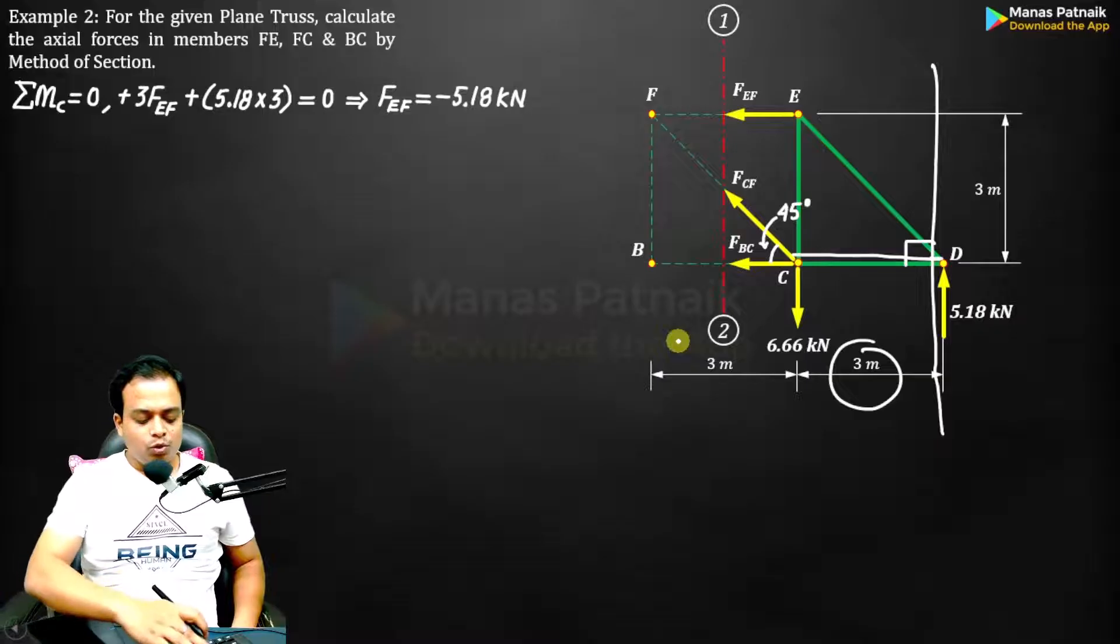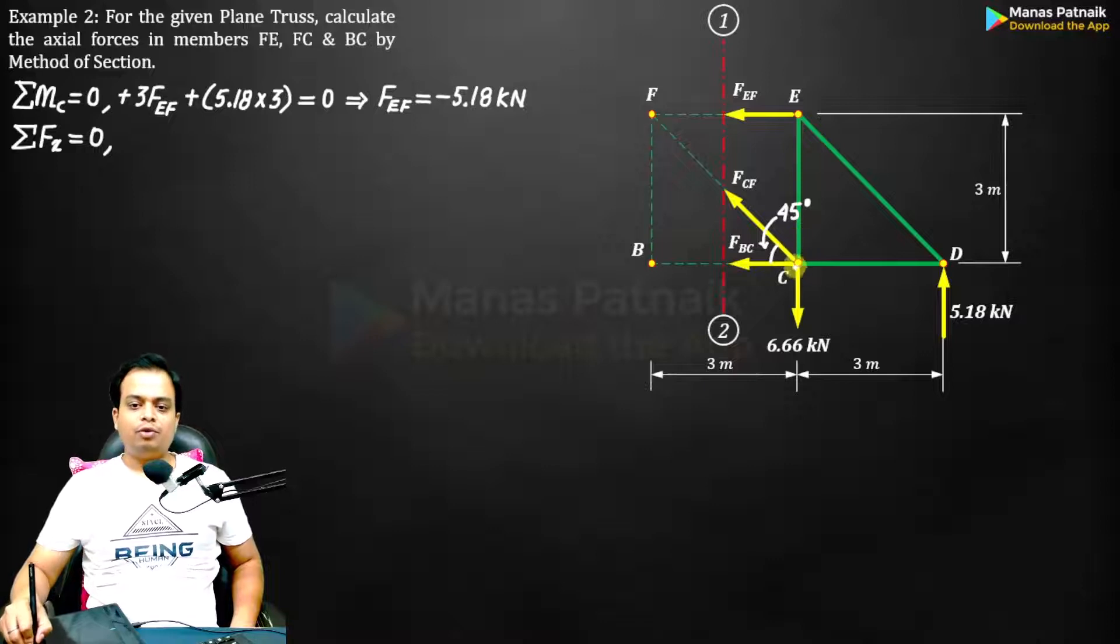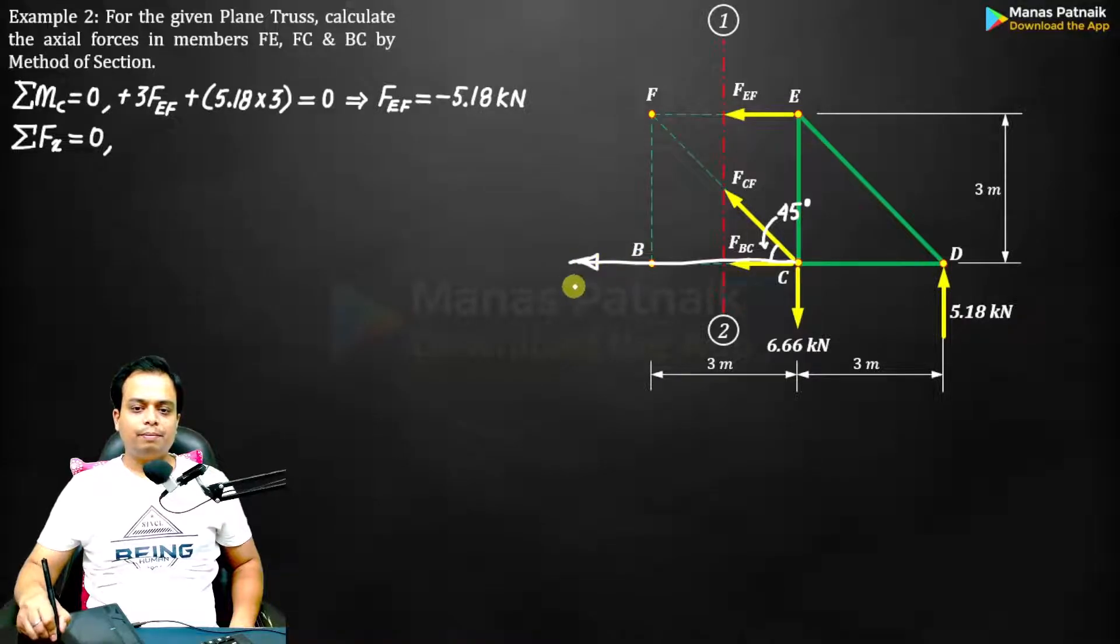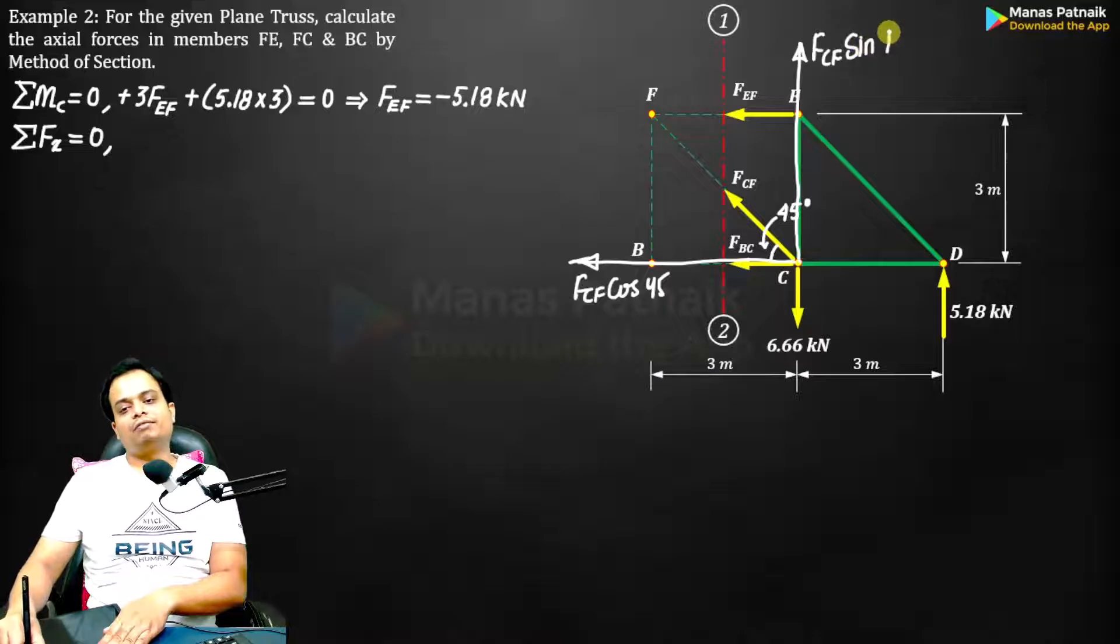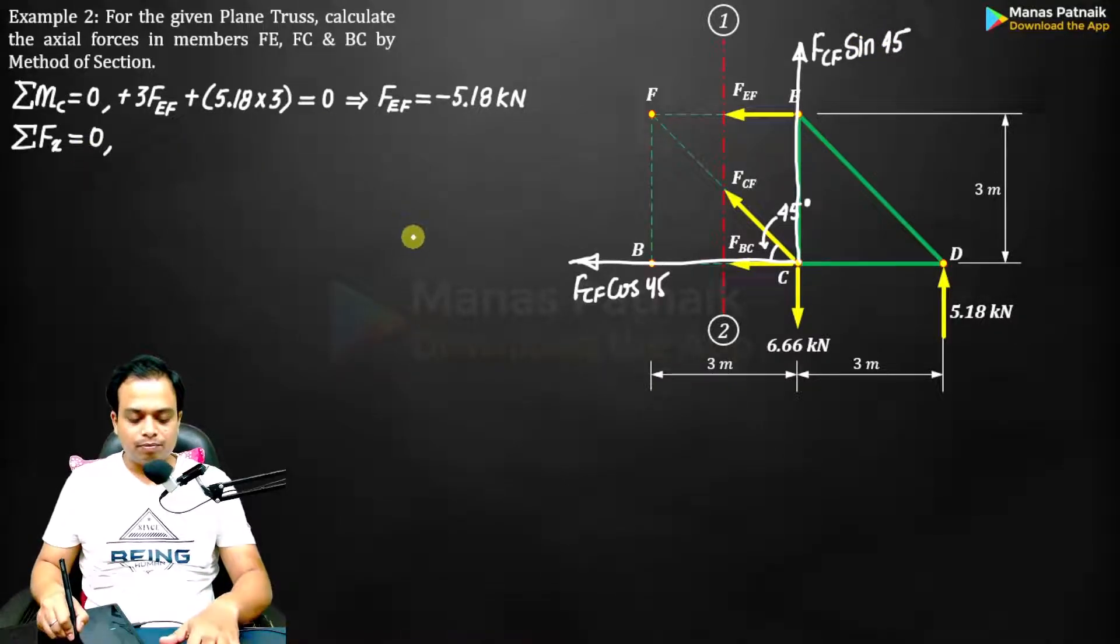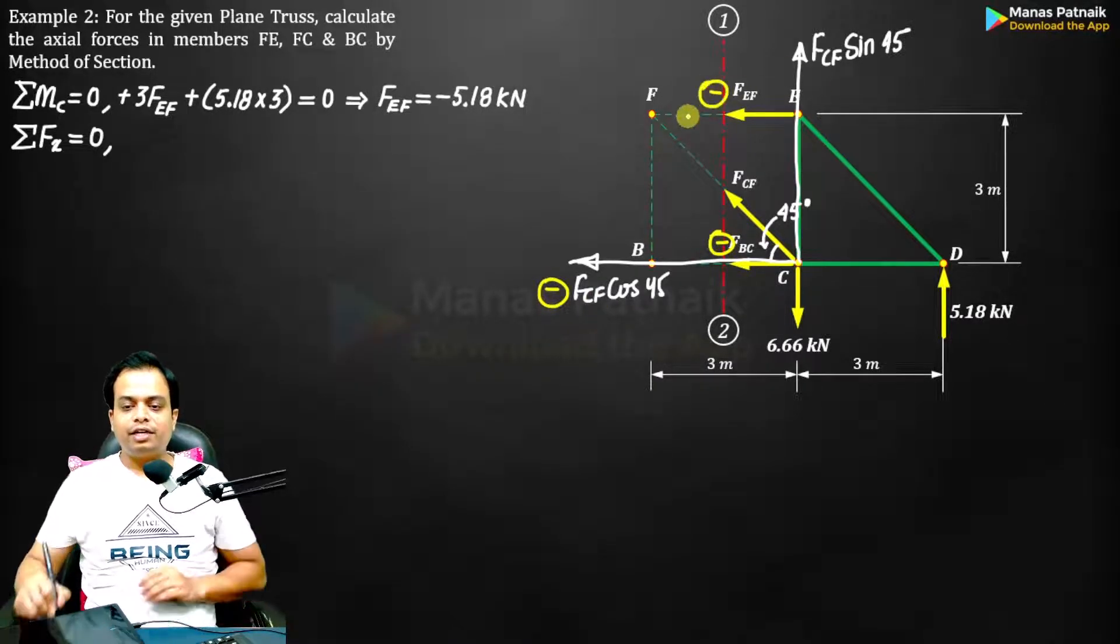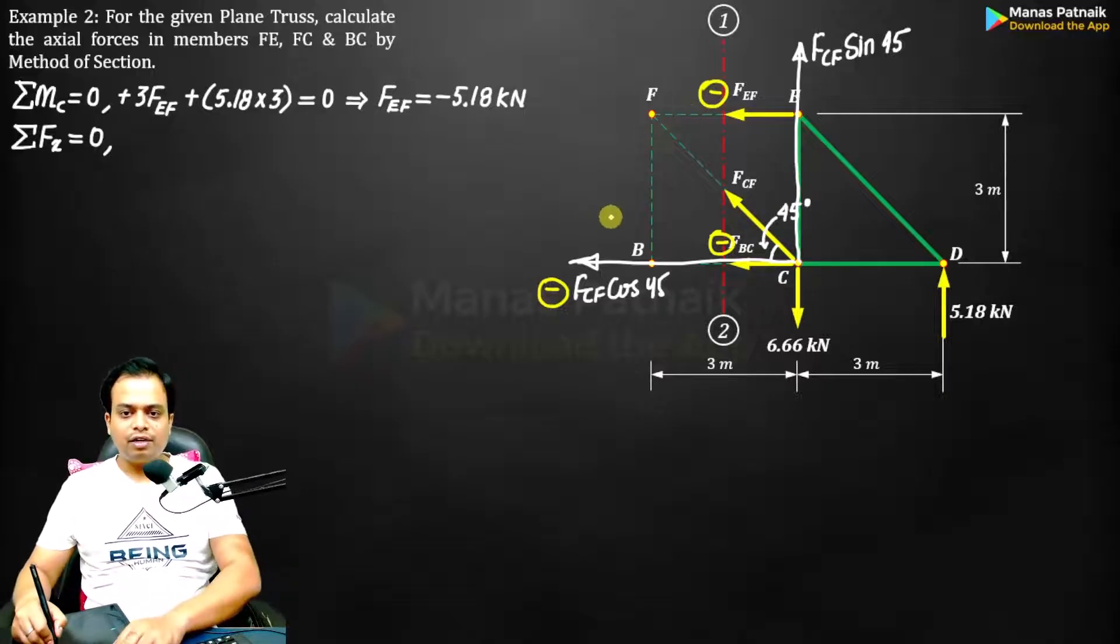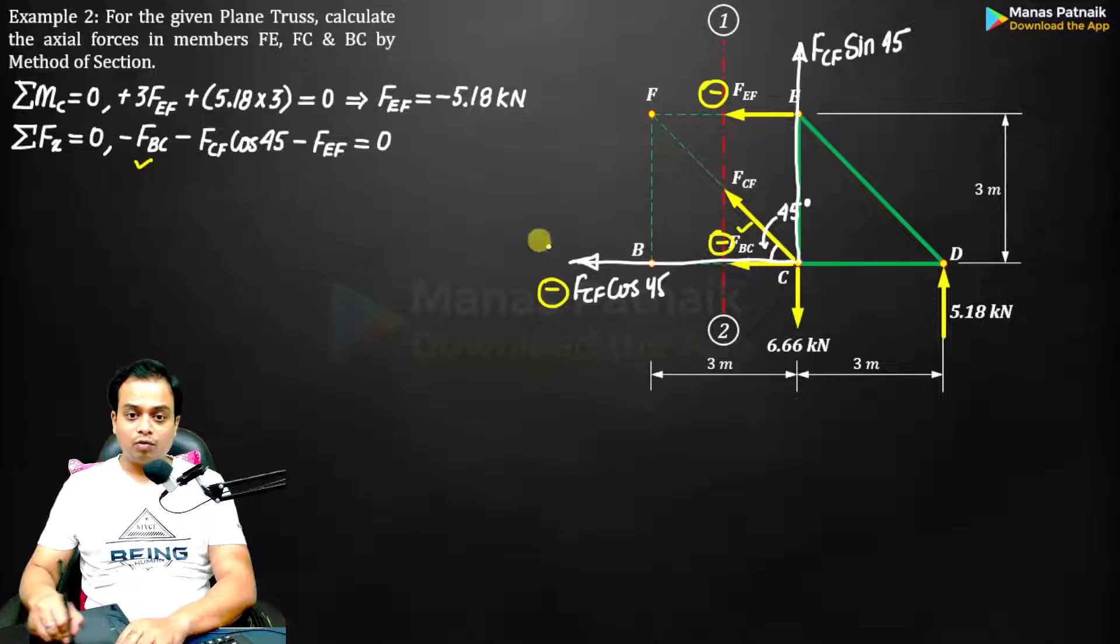What you can do is take FX=0. For that, you need to have the component of FCF. This angle over here is 45 degrees. So this is going to be FCF cos 45, and over here you will have FCF sin 45. So when you go for FX=0, negative, and this FBC is also negative, and this FEF is also negative. Let me write this: FBC, FCF cos 45, and FEF. All the forces have been taken into consideration. We already have the value of FEF, plug it in. Simplify it and frame it into an equation.